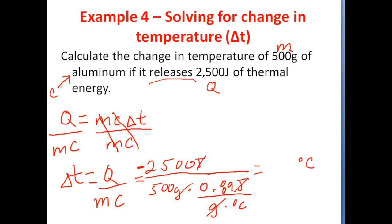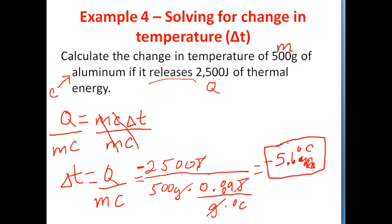So we take negative 2,500 divided by 500 times 0.89, and we end up with negative 5.6 degrees Celsius. If this 500-gram piece of aluminum is releasing 2,500 joules of energy, it will be associated with a negative 5.6 degree temperature decrease.